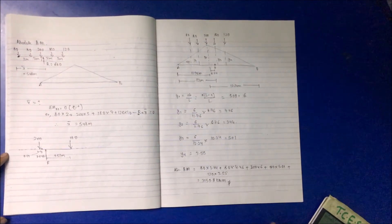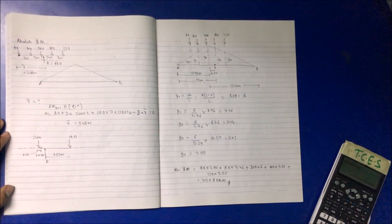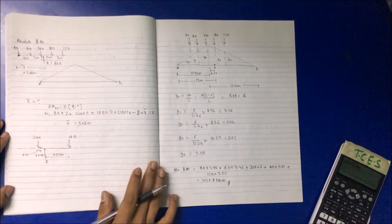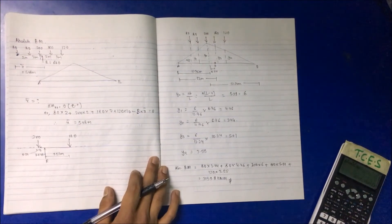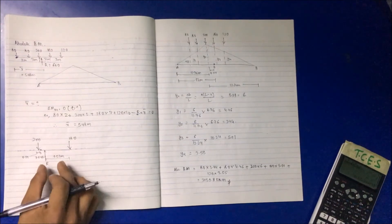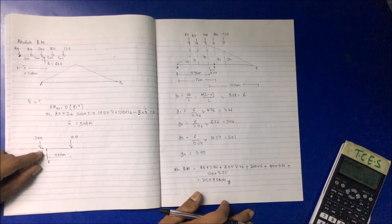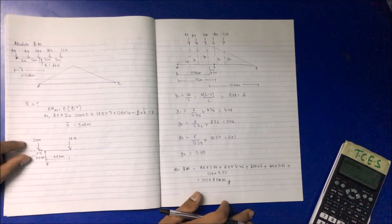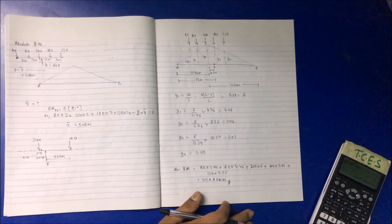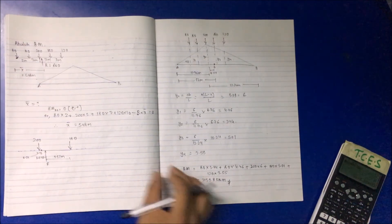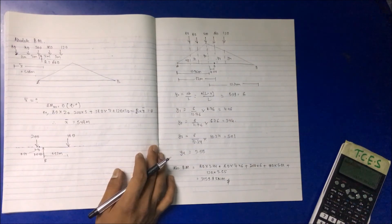In this way you can calculate the absolute bending moment in the beam. The key steps are: calculate the resultant force and the distance at which it acts, identify point D at equidistance from the critical load and the resultant, and use the ILD ordinates to find maximum bending moment, positive shear force, and negative shear force for a simply supported beam.